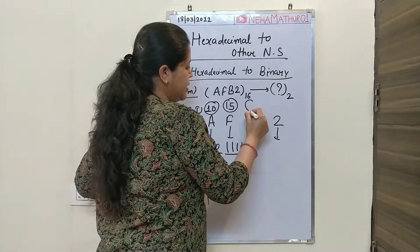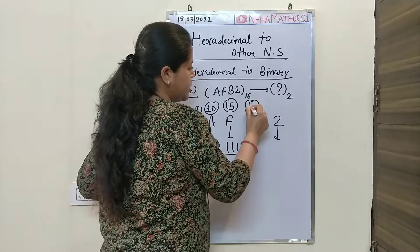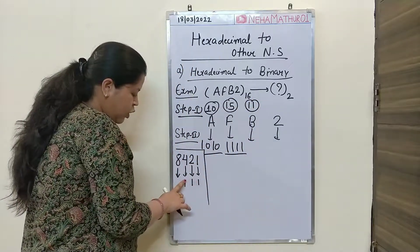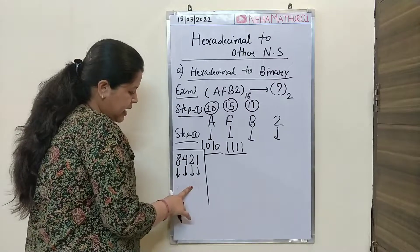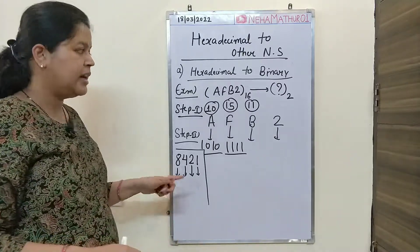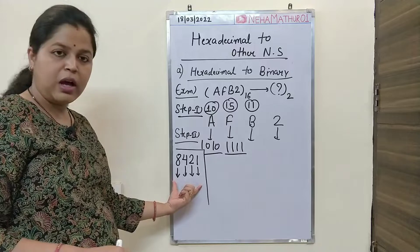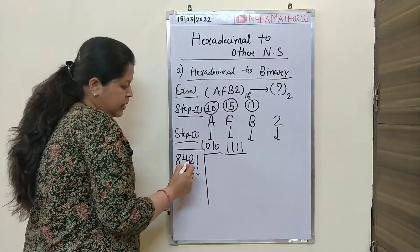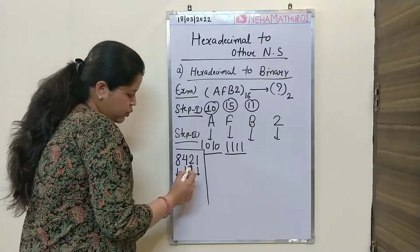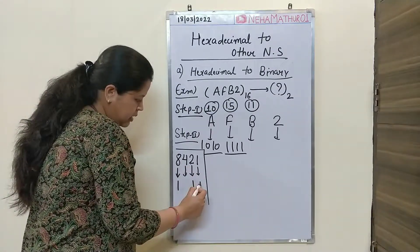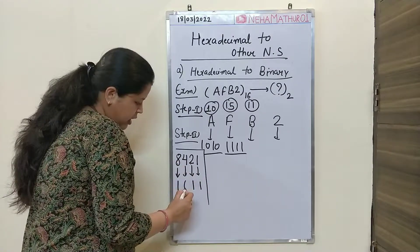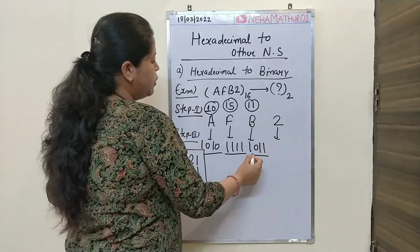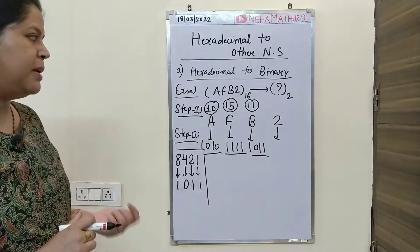Similarly, B means 11. Again using 8421, to get 11 we add 8 plus 2 plus 1. So 4 is not used and we write 0 for that position. The 4-bit binary equivalent for B is 1011.